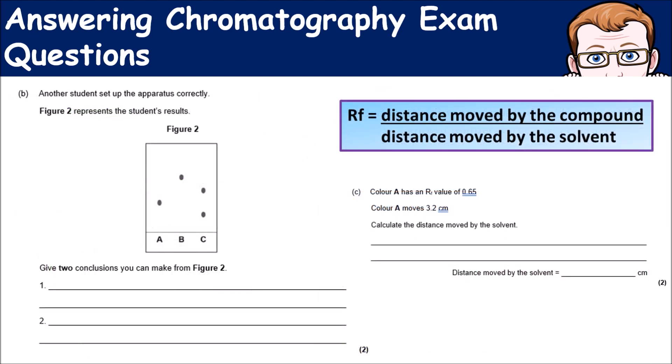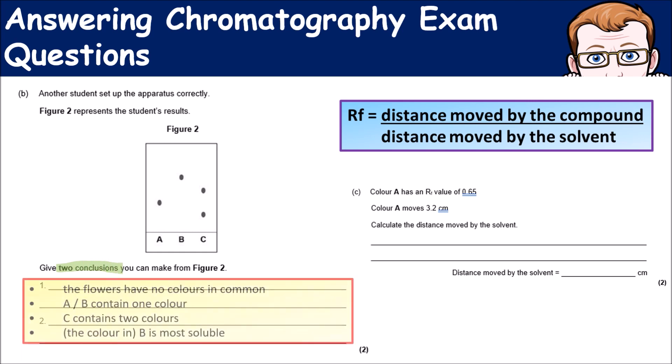The second part of this question: another student set up the apparatus correctly. This represents their results. Give two conclusions that you can make from Figure 2.